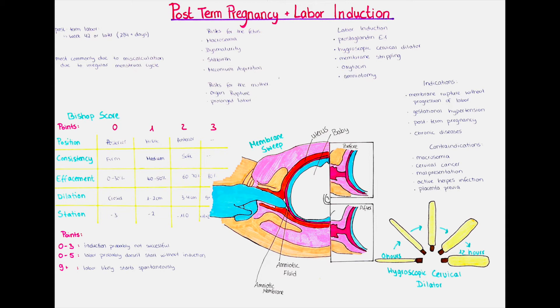Sometimes a labor induction is recommended. The induction must be carefully considered, and factors such as the cervical integrity, the health of the mother and baby, and changes in the vital signs of the baby play a key role in the decision of whether labor should be induced. Labor is usually induced if the benefits to either the mother or the child outweigh the continuation of the pregnancy, and it can be induced post-term or also in earlier stages of pregnancy. Indications include membrane rupture with chorioamnionitis, severe preeclampsia, membrane rupture without progression of labor, gestational hypertension, non-reassuring fetal status, post-term labor, and chronic diseases from before pregnancy such as chronic hypertension and diabetes.